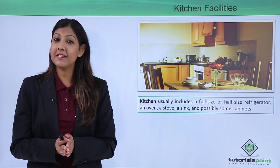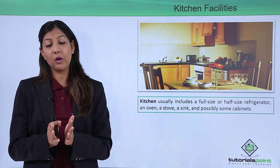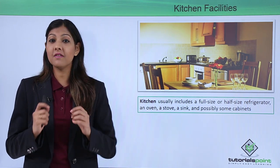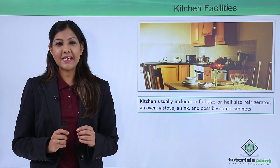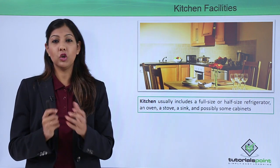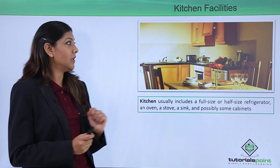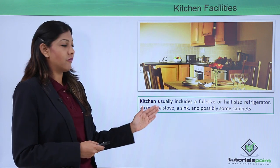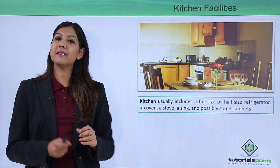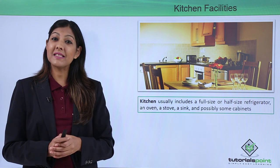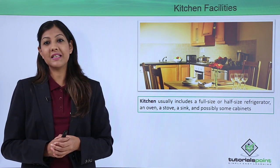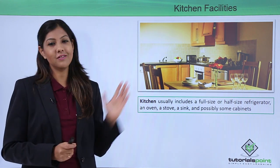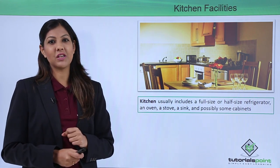Talking about kitchen facilities — many hotels also have nice kitchen facilities, specially for rented service apartments, which makes it very easy for people staying there. These include full size or half size refrigerators, an oven, a stove, a sink, and possibly some cabinets to keep your things. These are basic kitchen facilities provided in case you want to make yourself a cup of tea or coffee or store anything in the refrigerator. Kitchen facilities are something which are of definite help.